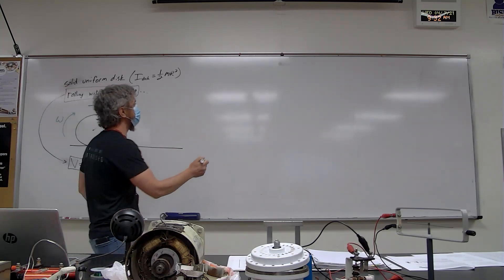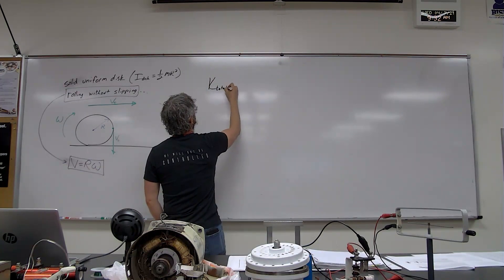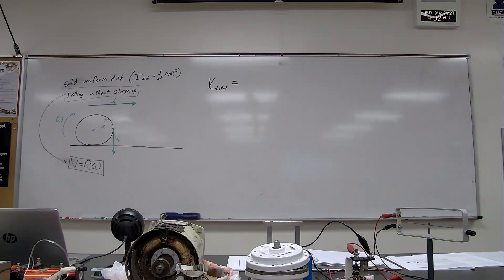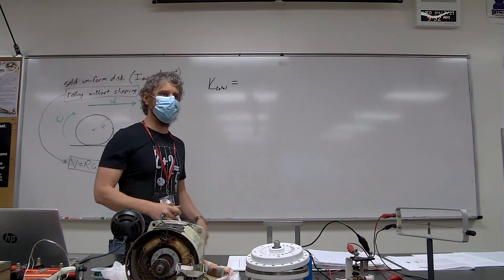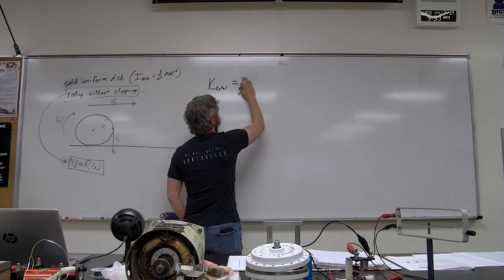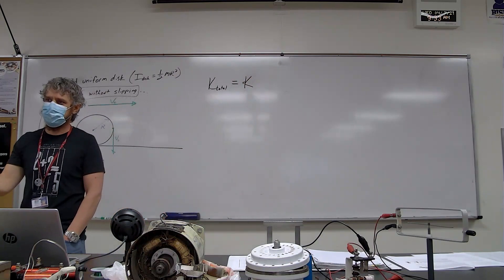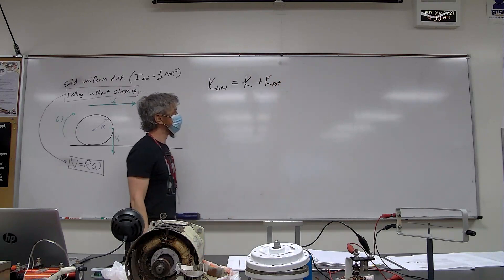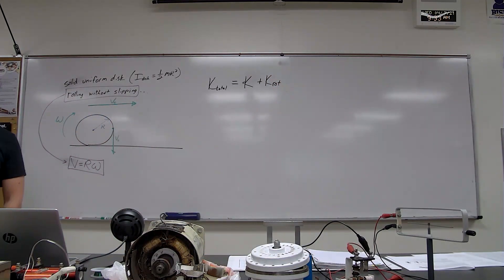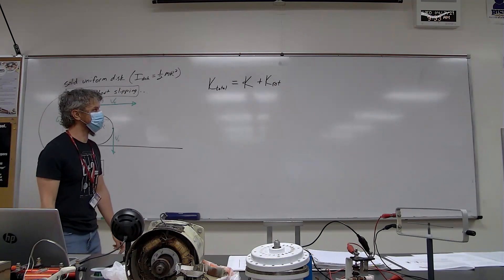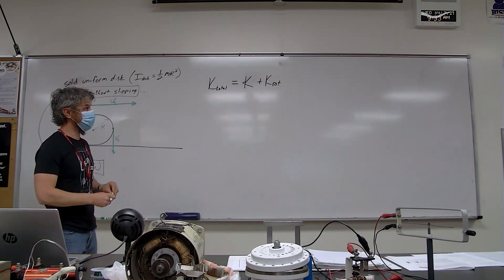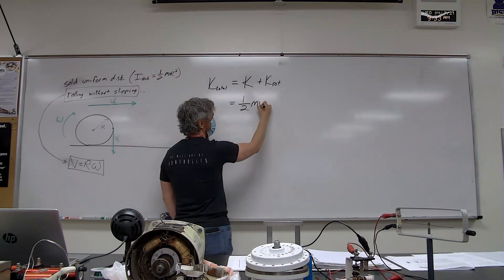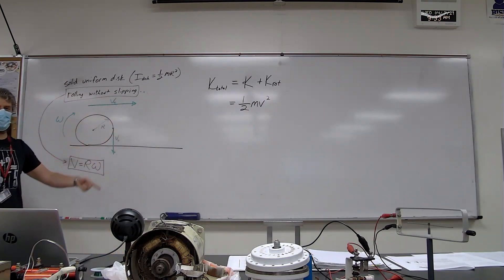With those considerations in mind, let's talk about the total kinetic energy of this disk. As shown in the simulation, gravitational potential energy translates into both translational kinetic energy and rotational kinetic energy. Our total kinetic energy is the translational KE — which up until now we just called kinetic energy, ½mv² — plus a rotational kinetic energy term. Both are measured in joules, so we can combine them into a single term.